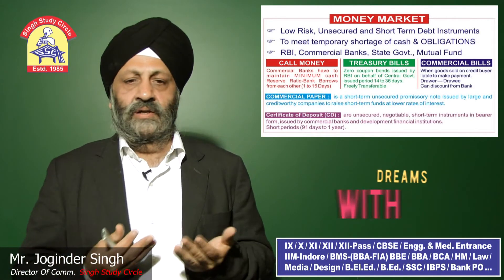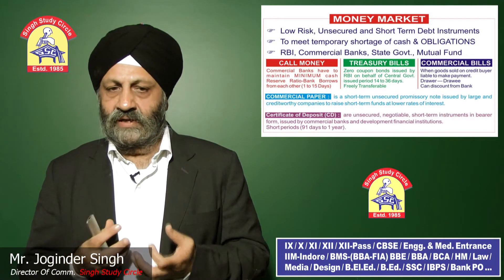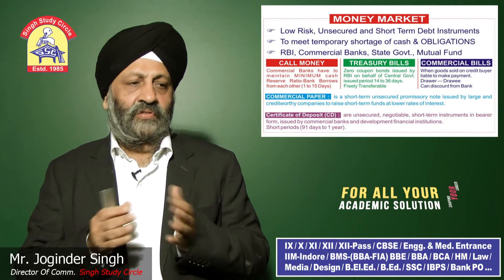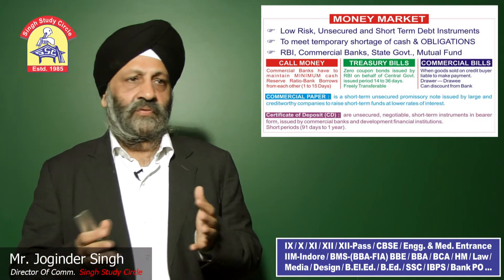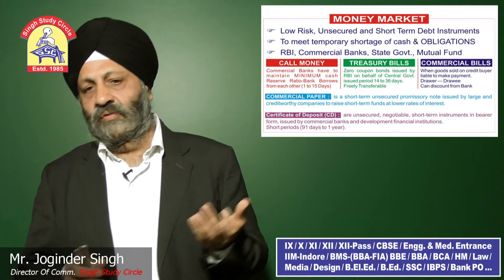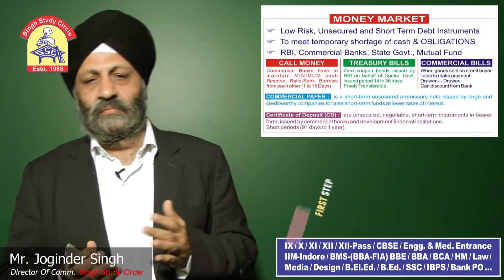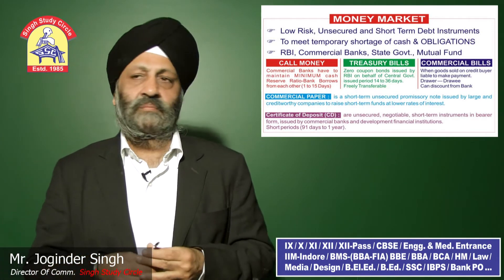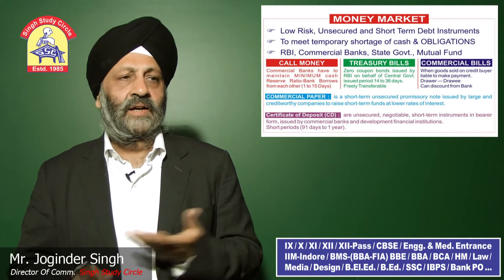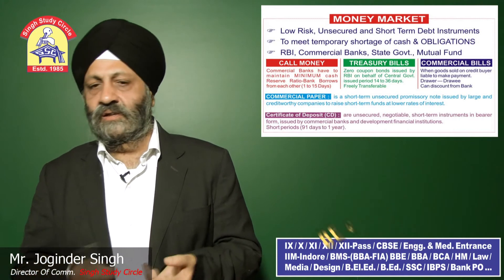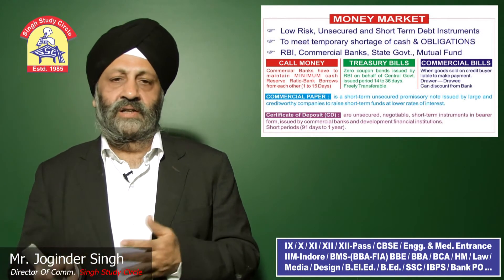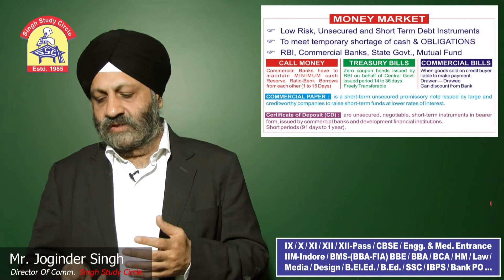The five money market instruments are: call money, which is for very short term — a bank ratio maintained by RBI with commercial banks for up to 15 days; treasury bills, which are zero coupon bonds issued by RBI for 91 to 364 days; commercial bills — bills of exchange involving a drawer, drawee, and bank, convertible to cash quickly; commercial paper — a short-term unsecured promissory note; and certificates of deposit with a time period of 91 days to one year.